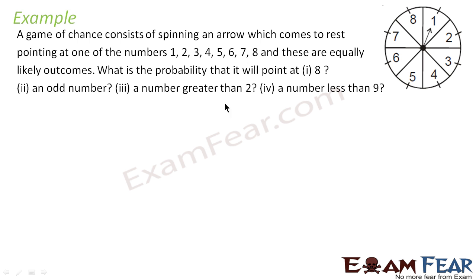Let us take one more example. A game of chance consists of spinning an arrow which comes to rest pointing at one of the numbers 1, 2, 3, 4, 5, 6, 7, 8, and these are equally likely outcomes. This is an example of a hit game where you have a board and there is an arrow. It may hit at 1, 2, 3, 4, 5, 6, 7, or 8 — we do not know. All are equally likely because the person hitting it is not trying to hit only at a particular point — he is just randomly throwing the arrow.